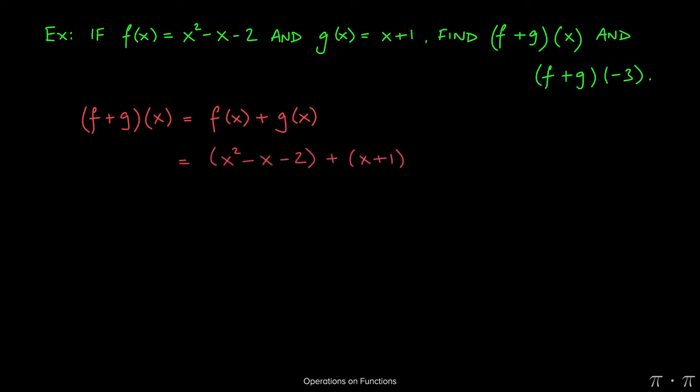So I replace f(x) with the function that we're given, x squared minus x minus 2, and similarly I replace g(x) with x plus 1. Now at this stage I have to combine like terms. That's how we add polynomials together.